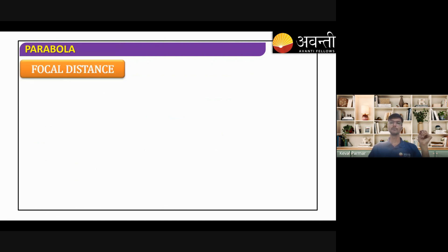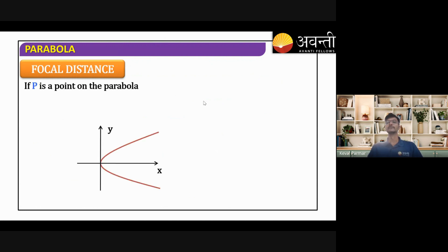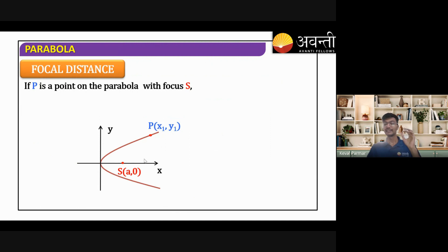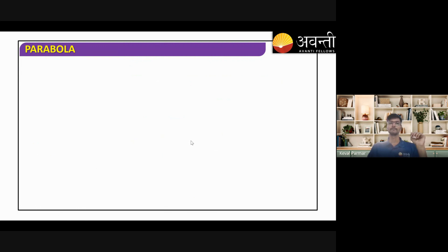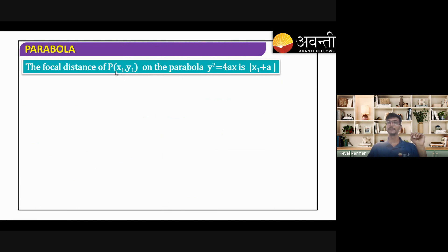Next is the focal distance. The focal distance is defined as the distance of any point P on the parabola from the focus. If P is any point (x₁, y₁) on the parabola with focus S, then the length SP is the focal distance. We can easily get it using the distance formula.